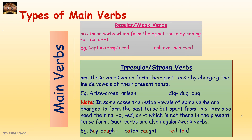Irregular verbs, on the other hand, show a change in the inside vowels of the present tense rather than adding D, ED, or T. For example, 'arise' changes to 'arose' and 'arisen' — the inside vowel changes from I to O. Similarly, 'dig' changes to 'dug' — the inside vowel I changes to U, and there is no D, ED, or T at the end. The basic difference is that regular verbs add D, ED, or T to form past tense, while irregular verbs change their inside vowel.